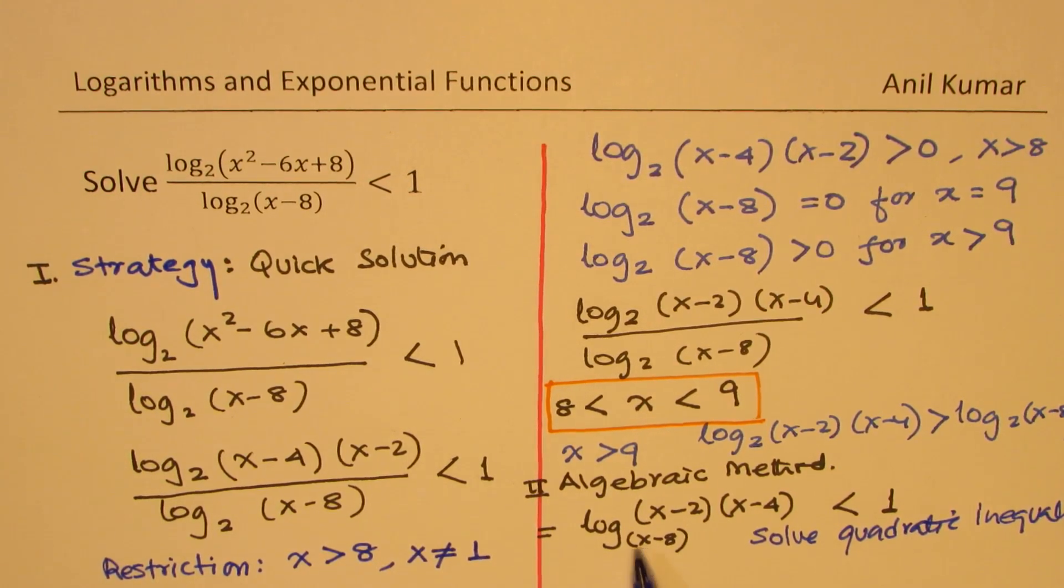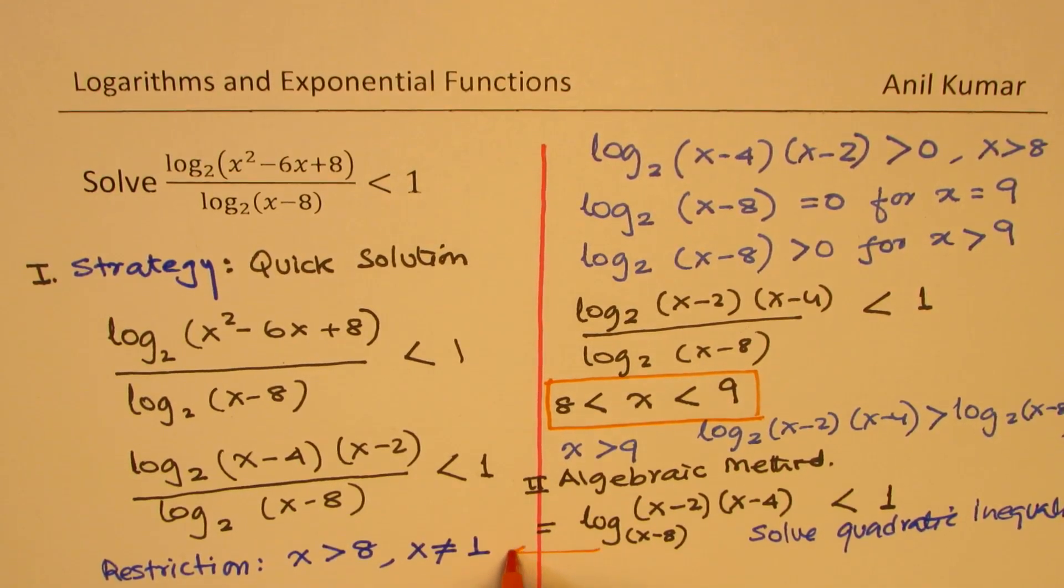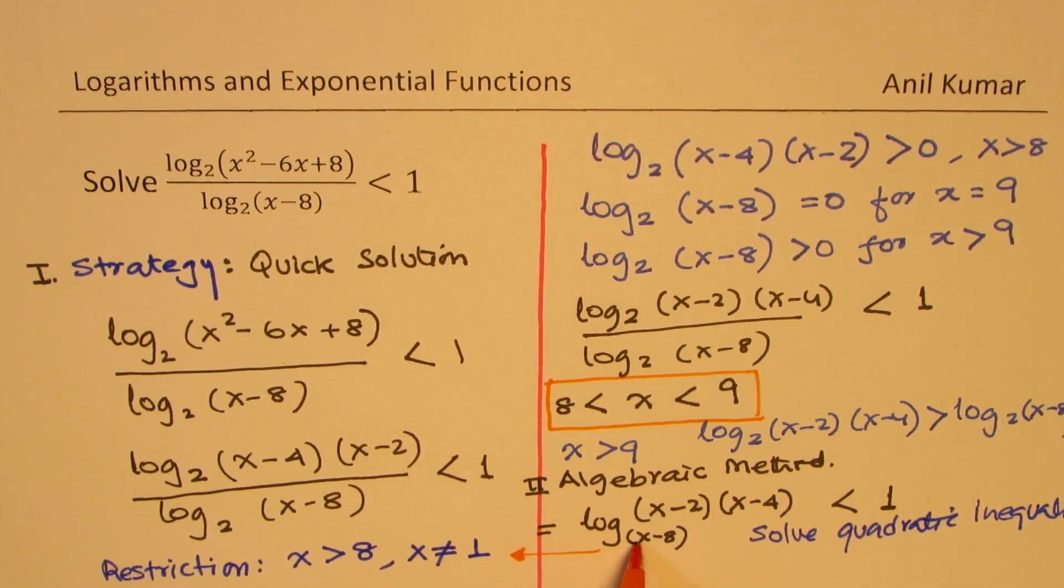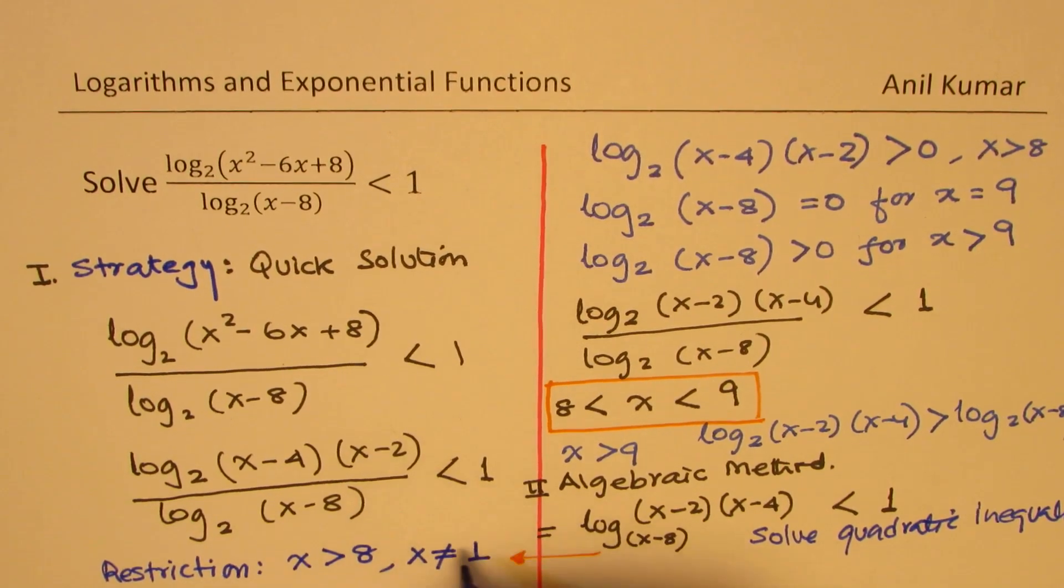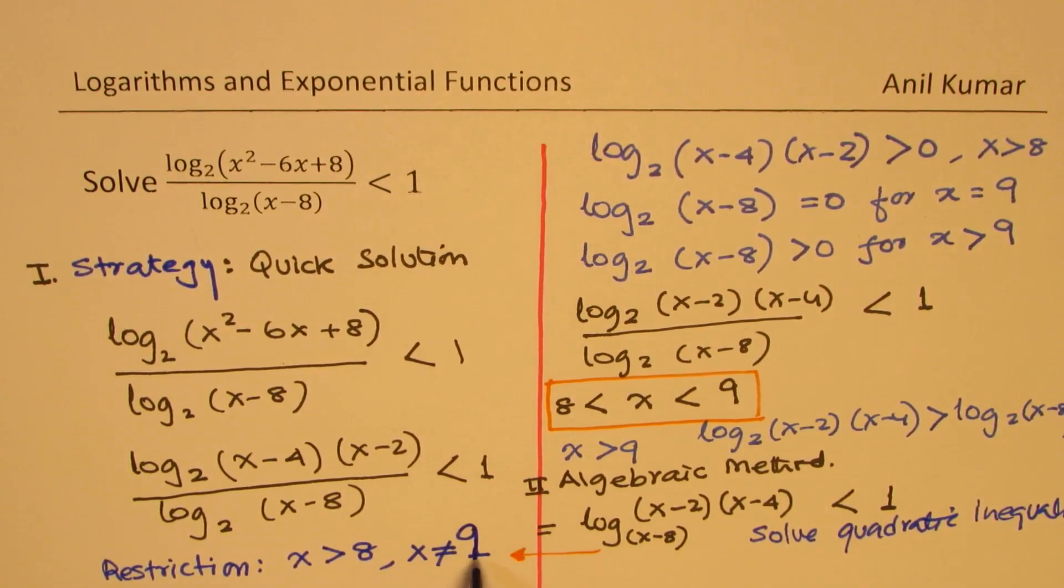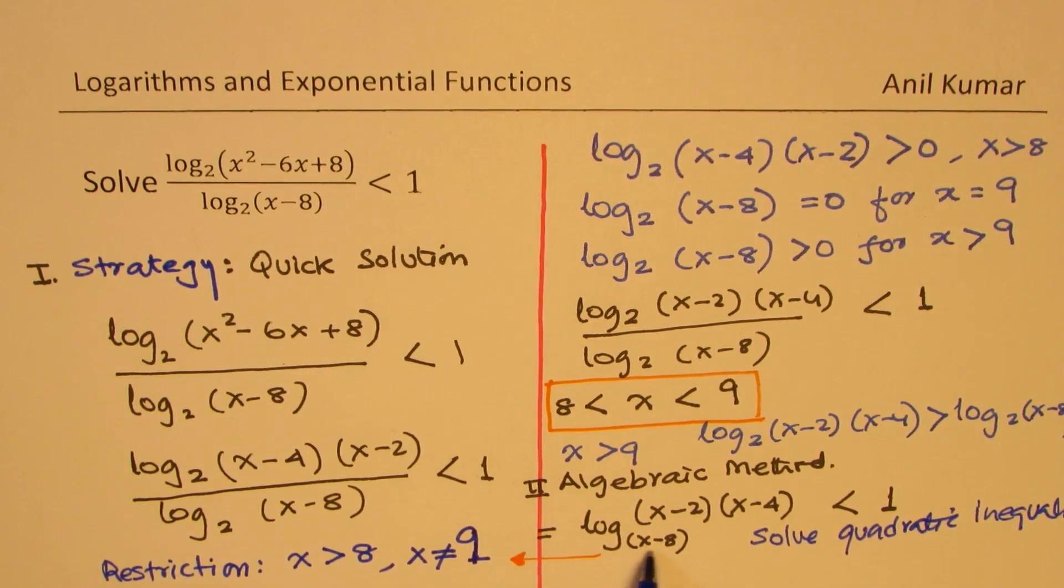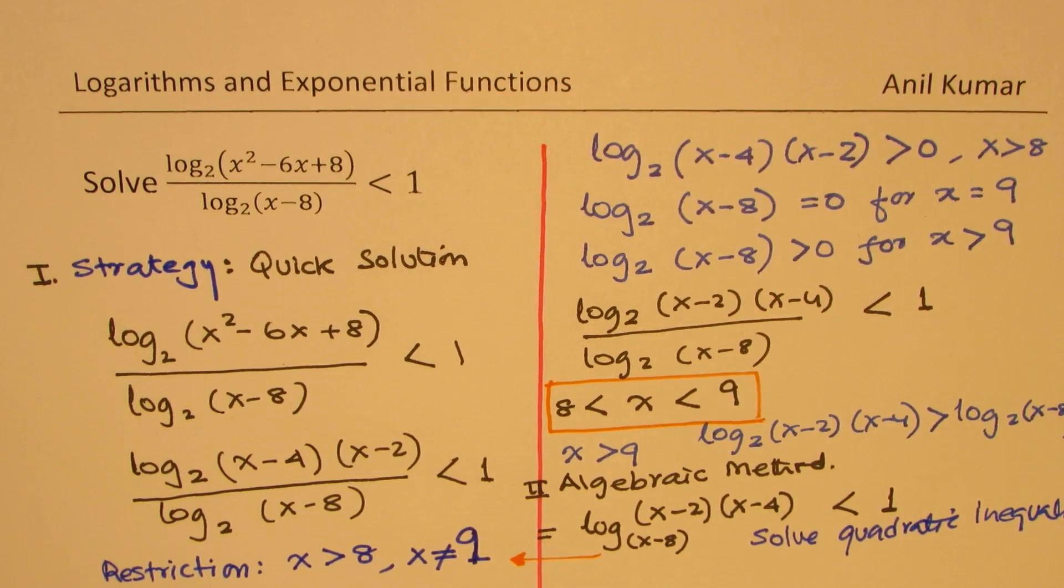Clearly, the domain here is greater than 8. And we cannot have base as 1. Since the base cannot be 1, from here you can see clearly that we get our restrictions. This base cannot be 1, so x is not equal to 9, because if I put 9 here, we get 1. Base cannot be 1. So clearly, we get these restrictions right there.